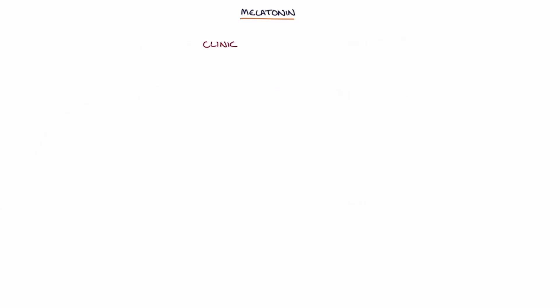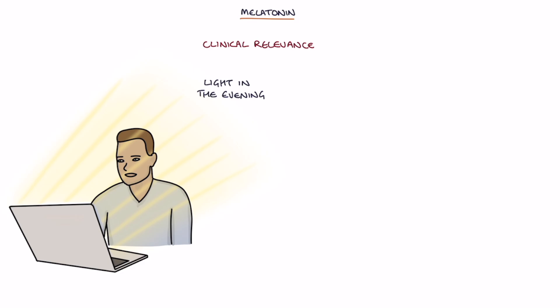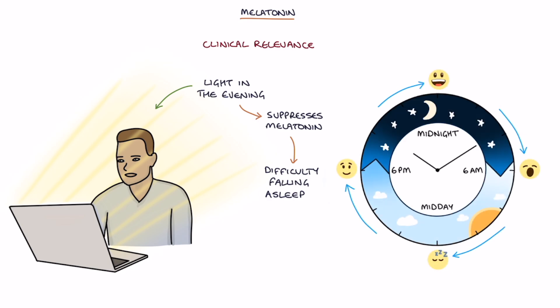Let's go through some clinical relevance. Exposure to light in the evening strongly suppresses melatonin, resulting in difficulty falling asleep and a phase shift in the sleep pattern with a later onset of sleep and difficulty waking early in the morning. Delayed sleep phase syndrome, or DSPS, involves an onset of sleep and waking more than two hours later than desired.